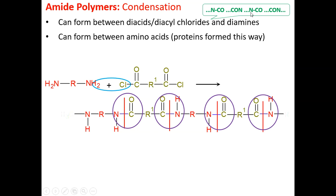Notice that if I have an alternating pattern, then I have the diamine with the diacyl chloride, or diacid. So you can see N-CO-CO-N, N-CO-CO-N.